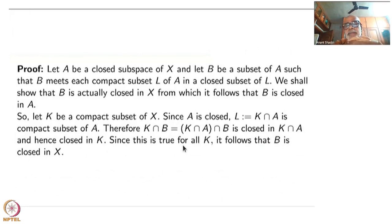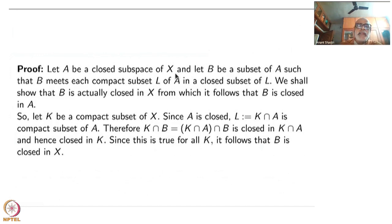Let A be a closed subset of X. Let B be a subset of A such that B meets each compact subset L of A inside a closed subset of L. We want to show that B is actually closed in X, from which it follows that B is closed in A. X is compactly generated, A is a closed subspace, and I want to show that A is compactly generated. So start with set B which has this property: B meets each compact subset L of A in a closed subset. From this I have to show B is closed in A, but I will actually show B is closed in X.